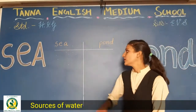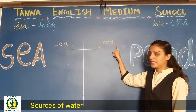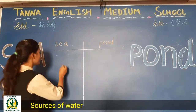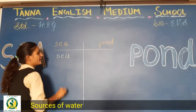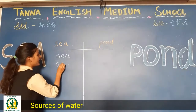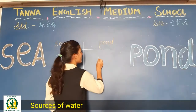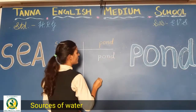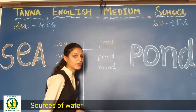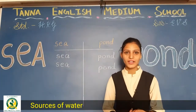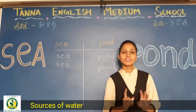C मतलब समुद्र. S-E-A, pond — P-O-N-D. आपको यह spelling भी learn करने हैं. C का spelling क्या होता है? S-E-A. And pond का spelling? P-O-N-D. Proper lines में अच्छे से लिखना है. यहाँ से हमें water मिलता है. Water के sources में हमने river, lake, sea, pond — four spellings किये हैं.